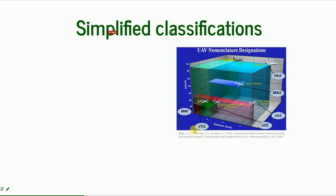There are also simplified classifications that are good to know. I don't recommend reading the whole article and learning all the terminology, but there are some class names that will appear in papers or when you're looking for information. HALE, MALE, and LALE may look unfamiliar if you don't know the classification. These stand for high altitude long endurance, medium altitude long endurance, and low altitude long endurance. People make up their own shortcuts all the time.